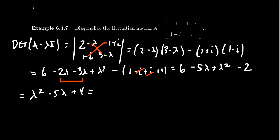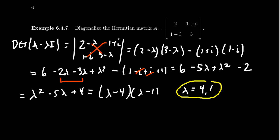Putting this all together, our characteristic polynomial is λ² − 5λ + 4. We want factors of 4 that add up to −5, giving us (λ−4)(λ−1). Our eigenvalues are 4 and 1. As predicted — because this is a Hermitian matrix, the eigenvalues necessarily have to be real.